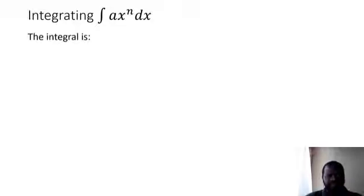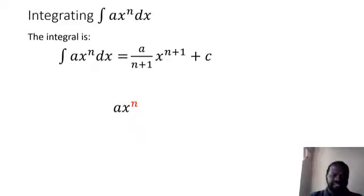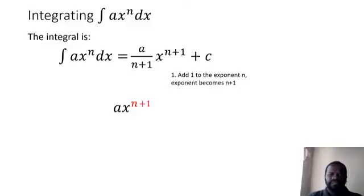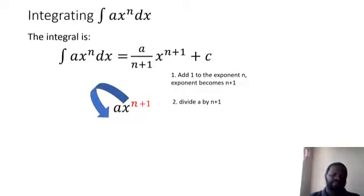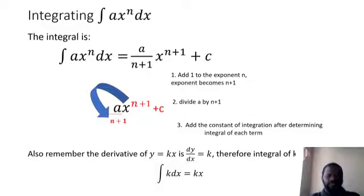To integrate a function in the form ax exponent n, this result will be given in the exam. You have the function ax exponent n: you add one to the exponent so it becomes n plus 1, then you divide a by n plus 1, giving you a over (n+1) times x exponent (n+1), then you add the constant of integration. Also remember that the integral of a constant k is kx.